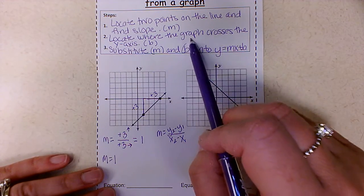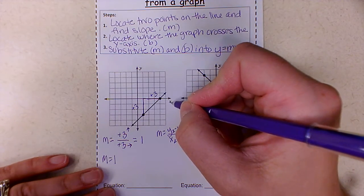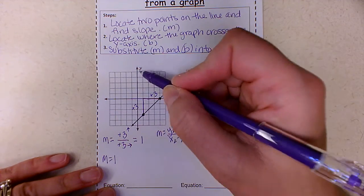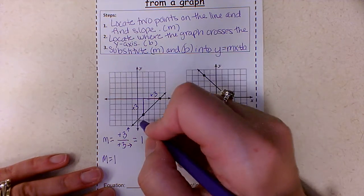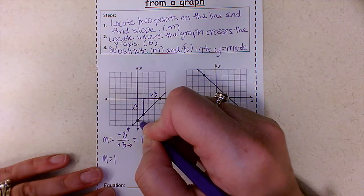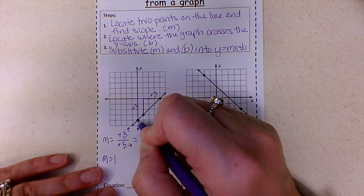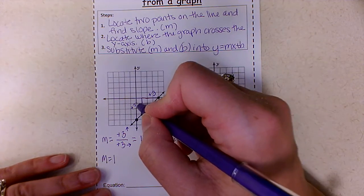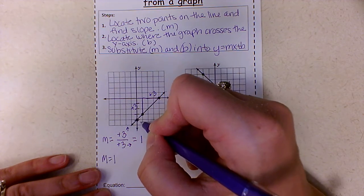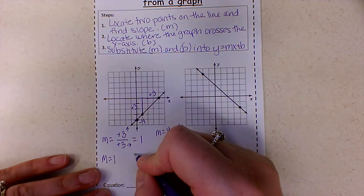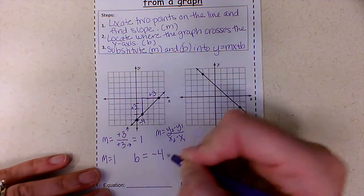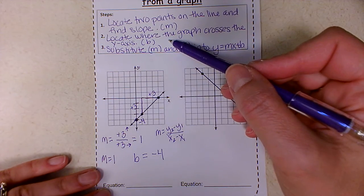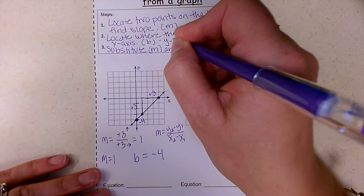Number two, locate where the graph crosses the y-axis. So this is the x, this is the y. So I want to know where this line crosses this axis. So where it crosses is going to be at this point right here, because I see it crosses this y-axis, and this line cross right here. So I just have to count. So this is negative one, negative two, negative three. So this is at negative four. So my b is negative four. So I located two points and found slope. I located where the graph crosses the y-axis, and this is the y-intercept.